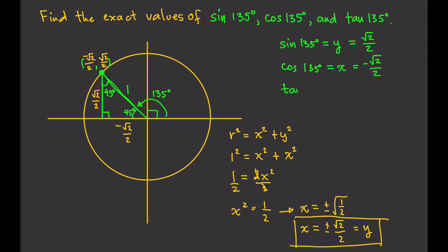So, sine of 135 degrees equals y over x. y is negative square root of 2 over 2. x is negative square root of 2 over 2. This cancels out. That cancels out. So, we're left with equals negative 1. So, tangent of 135 degrees is negative 1. And that's it.